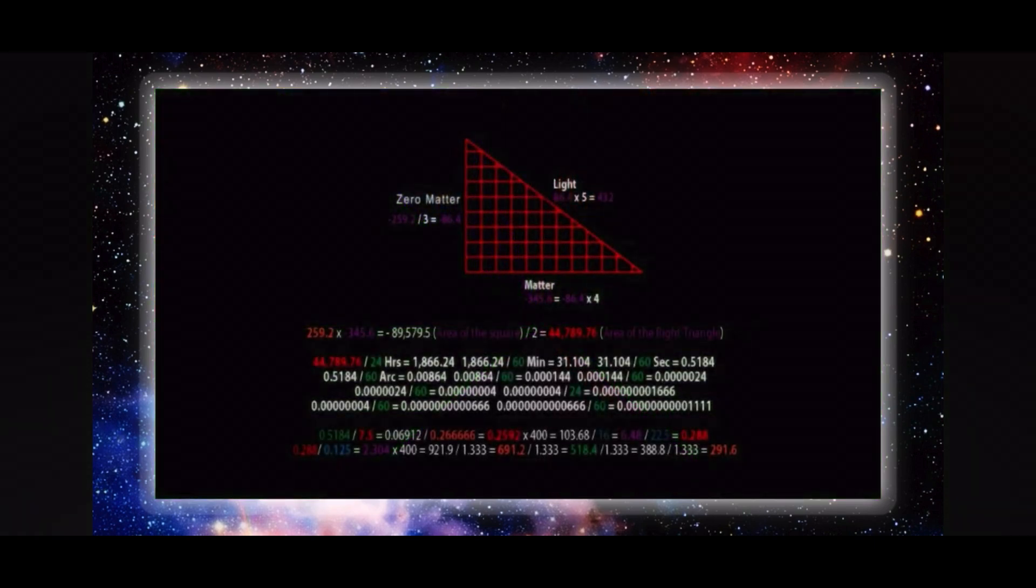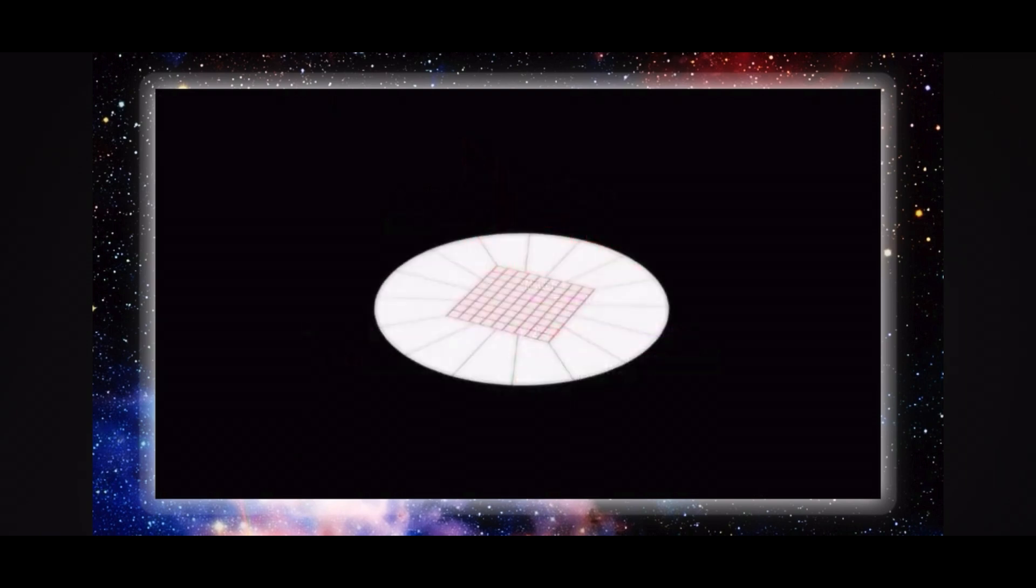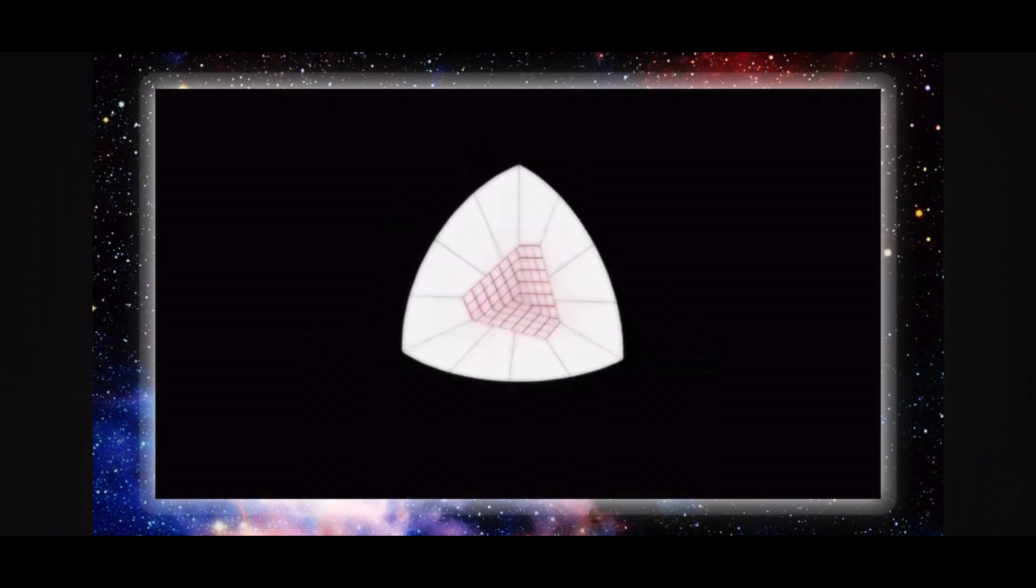This 3-4-5 triangle displays the ratios of zero matter to light and light to matter. From the area of the triangle defined by this right triangle with the ratios of 3 to 4 to 5, we are able to calculate the resonant frequency of the element.